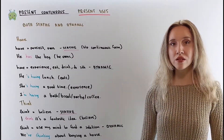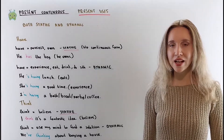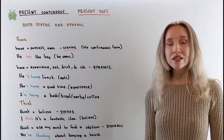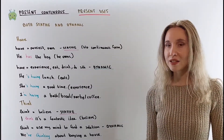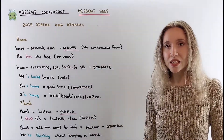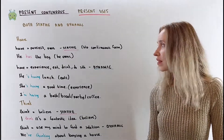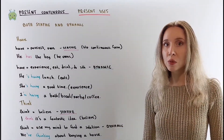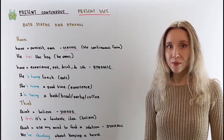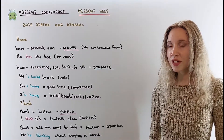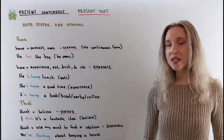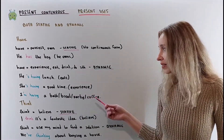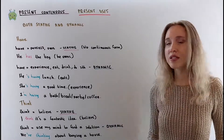Some verbs can function as both dynamic and stative verbs, but the meaning changes. The verb 'have' is a stative verb when it means own or possess: he has the key — this means he owns the key. When 'have' means experience, do, eat, or drink something, it is a dynamic verb and can be used in continuous tenses. For example: he is having lunch — he eats. She is having a good time — she experiences it. I am having a bath, a break, a party — I am doing or drinking something.